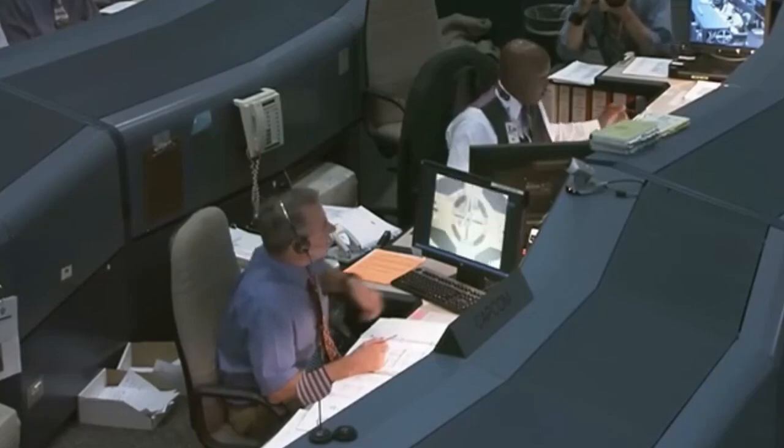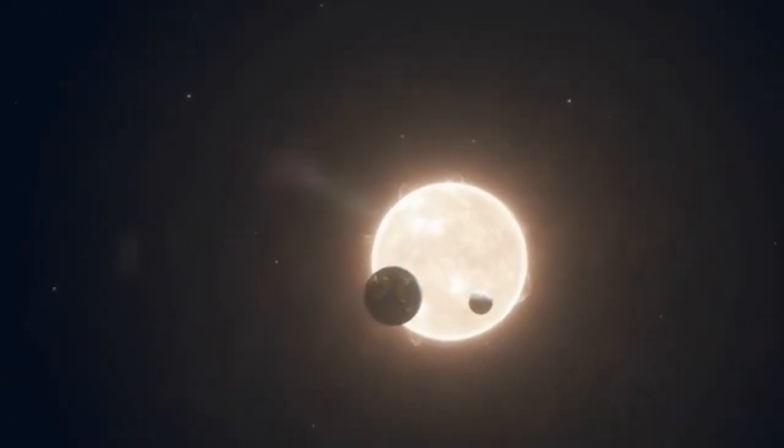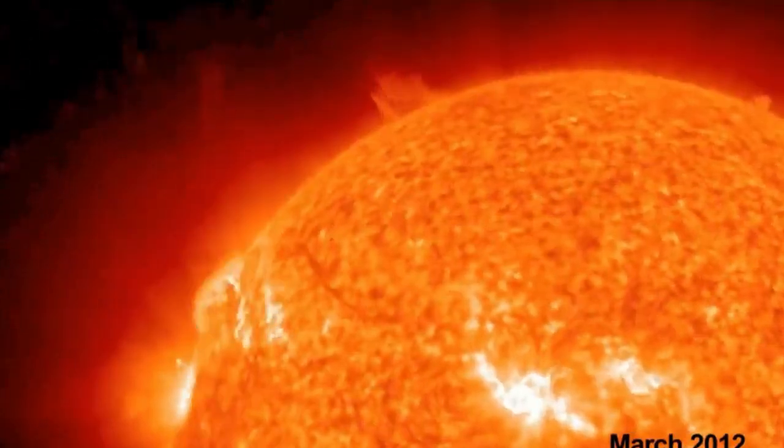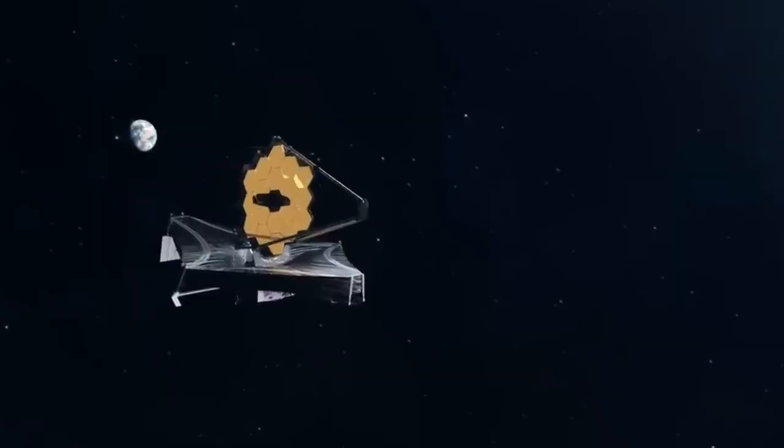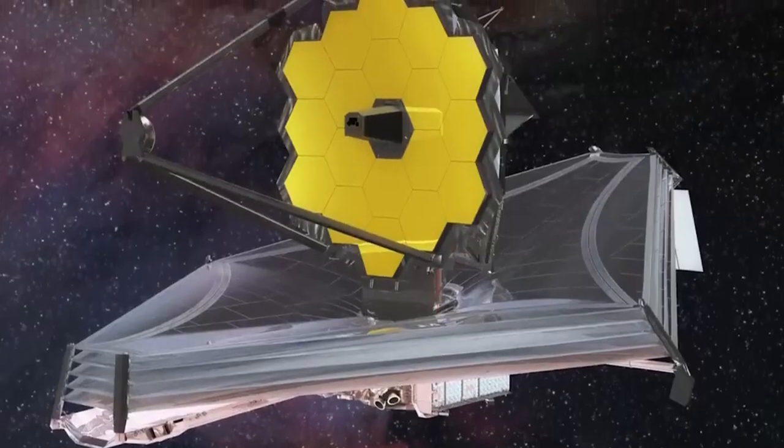Naturally, the need for a successor, the James Webb Space Telescope, stemmed from the desire to overcome these limitations. The JWST was designed with larger and more advanced instruments, specifically optimized for infrared observations, enabling it to peer deeper into space, study the earliest galaxies, and characterize exoplanets in ways the Hubble simply couldn't.